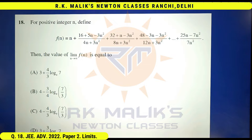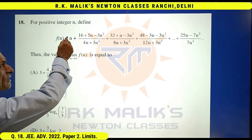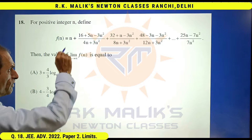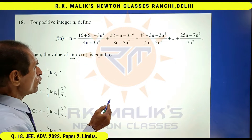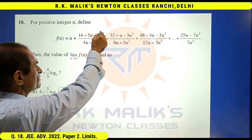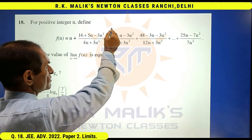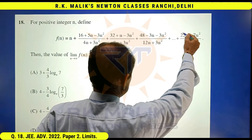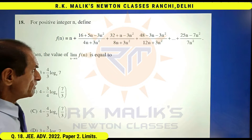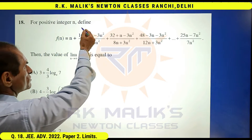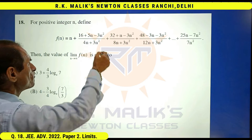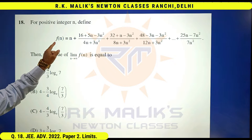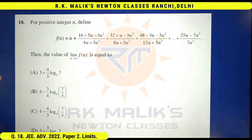First, we check which indeterminate form the question is in. Clearly, as n tends to infinity, this part tends to infinity. Each of the other parts tends to minus one, so this whole expression tends to minus n. Hence, the question is in the form of infinity minus infinity, which is an indeterminate form.